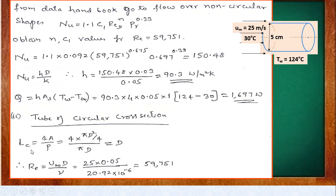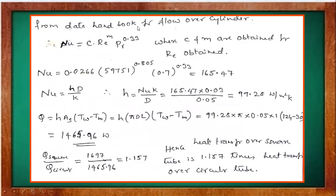For the circular cross-section tube, the characteristic dimension via 4A/P = 4 × (πD²/4) / (πD) = D, which is 0.05 m. Reynolds number = U∞ × D / ν. From the data handbook under flow over cylinders, the Nusselt number is Nu = C × Re^m × Pr^0.33. Find C and m, substitute to get Nu, then h = Nu × k / D.